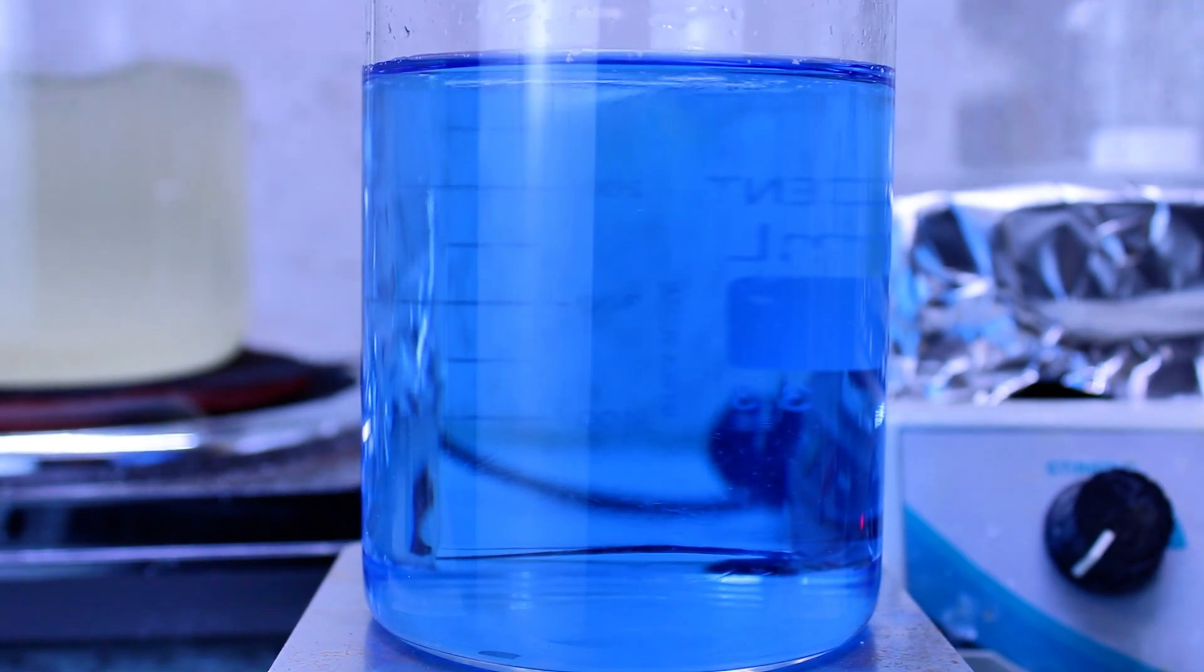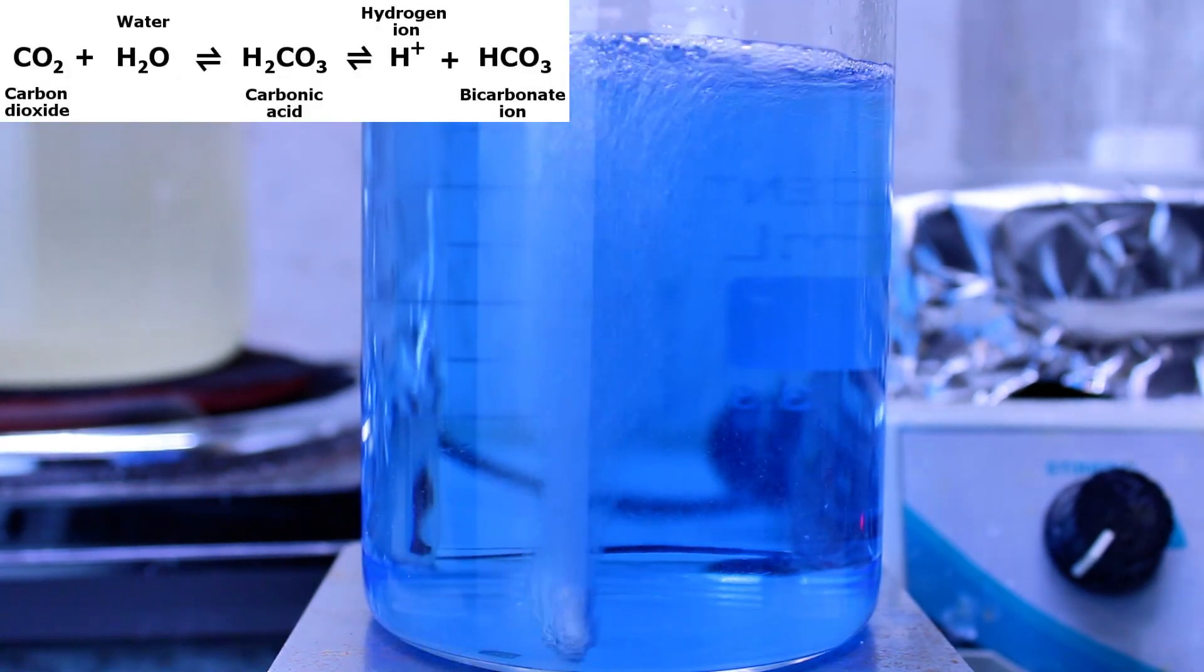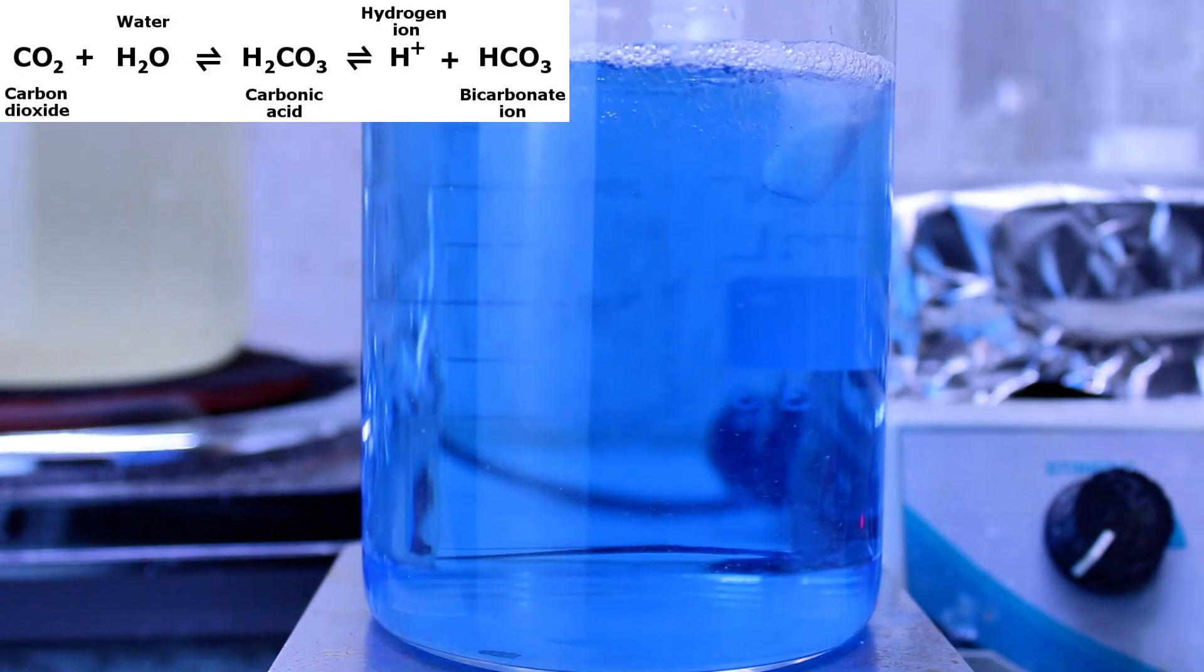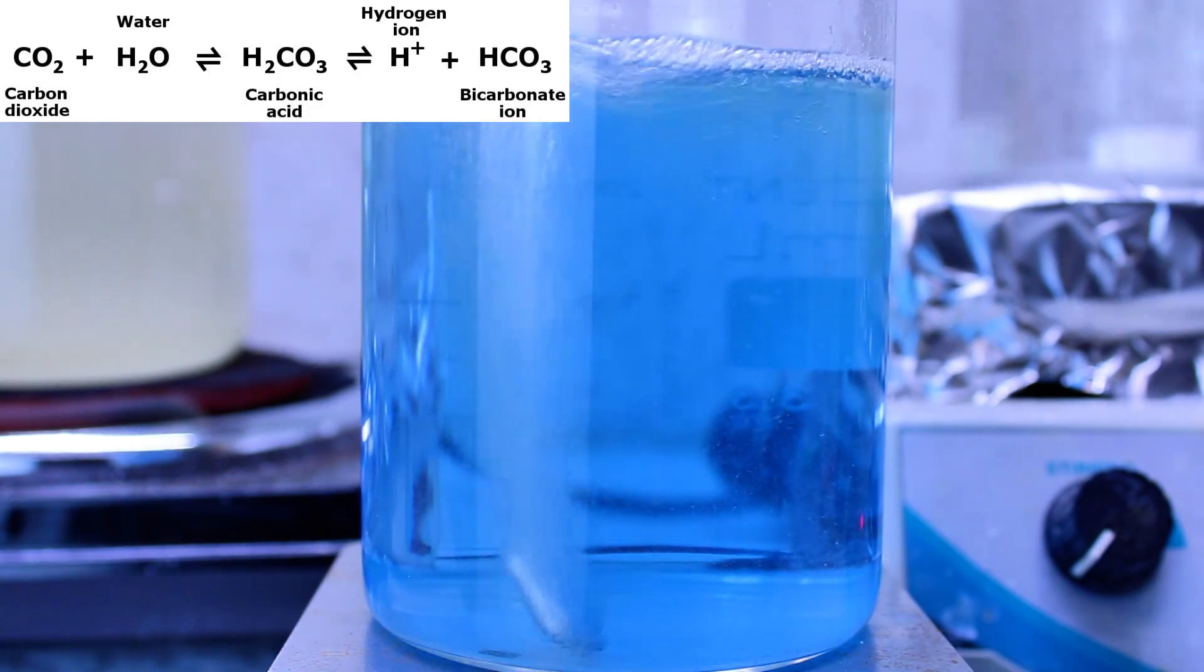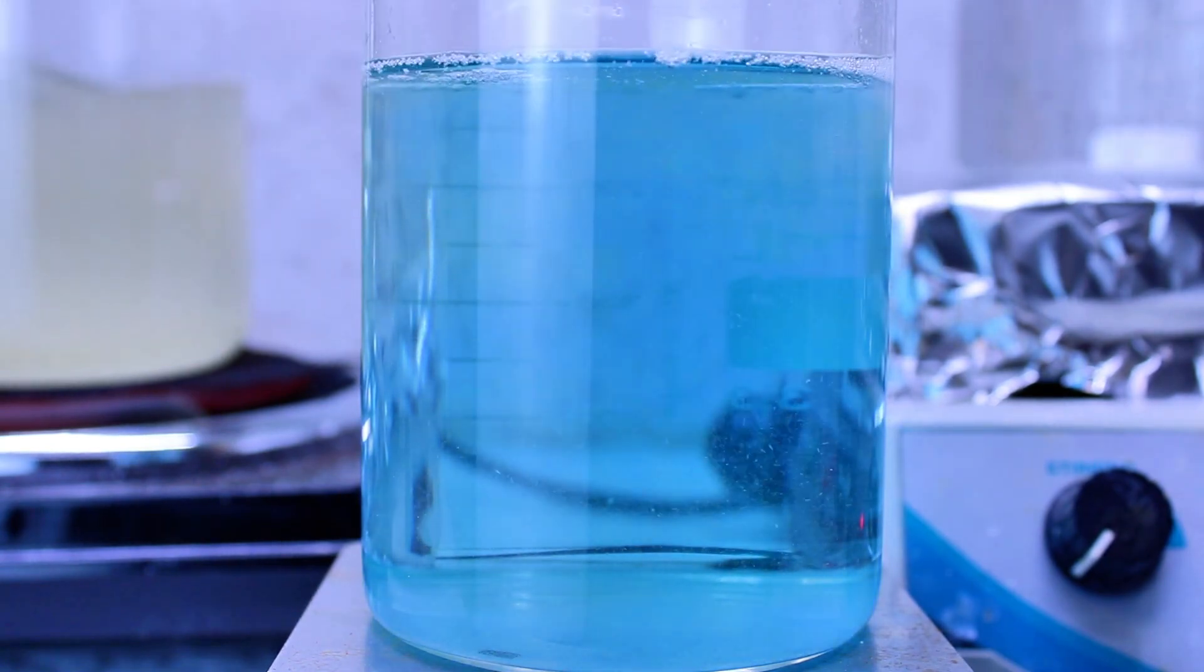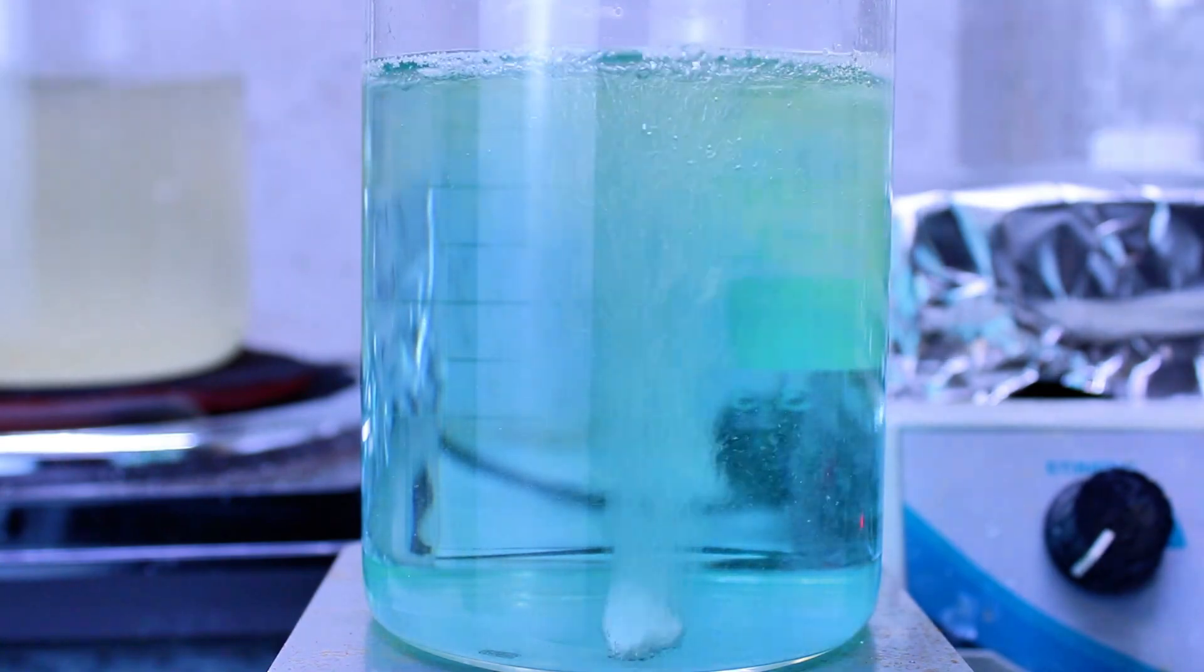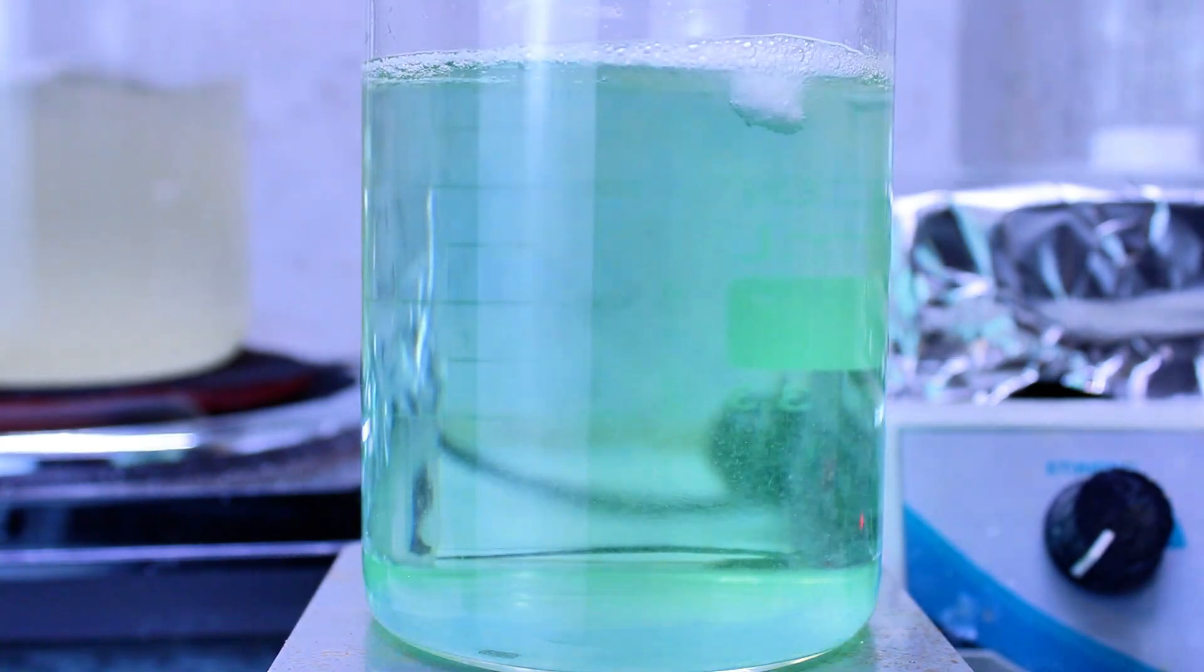Due to the addition of the ammonia, nothing visible happens at first, but as the CO2 reacts with water, it forms a weak acid called carbonic acid. As the concentration of this carbonic acid increases, the pH becomes more and more acidic, which results in the indicator changing from blue to green to yellow.